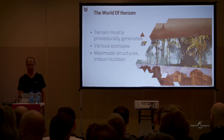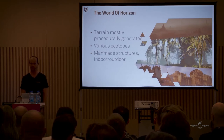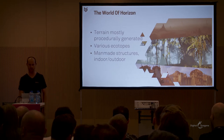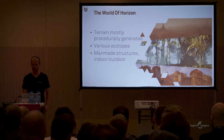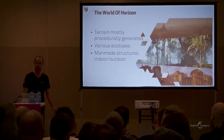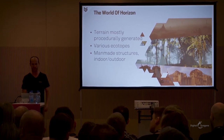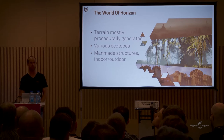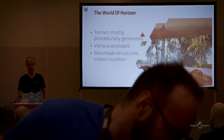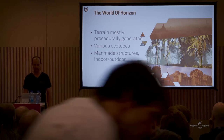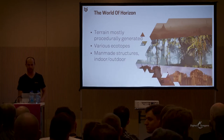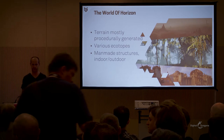The world of Horizon is huge, and most of the terrain is procedurally generated. The world supports a lot of different ecotopes — a large variety of rivers, forests, vegetation, climates, and wildlife. Next to that, the world is also filled with man-made structures and settlements, both indoor and outdoor. All of this makes it quite challenging for a game programmer to implement a solid traversal system.